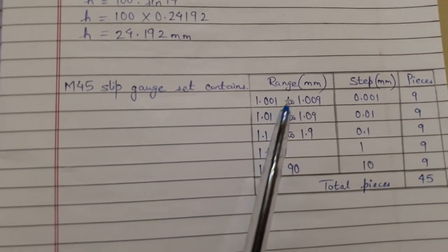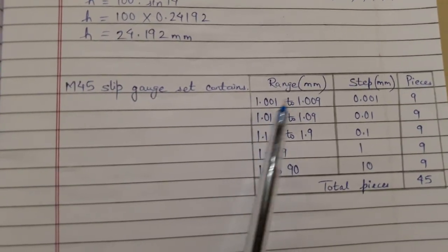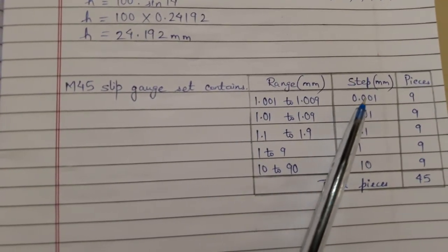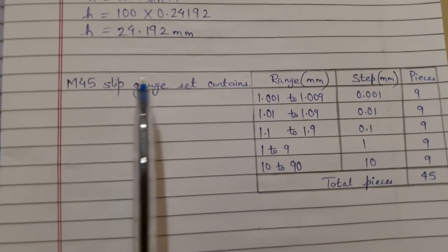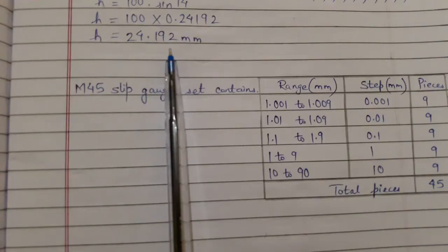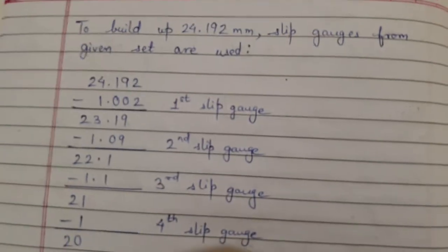So we will have here 1.002, so we can use this to satisfy the third decimal place. Let us see how it is done to build up 24.192 mm slip gauge from the given set.